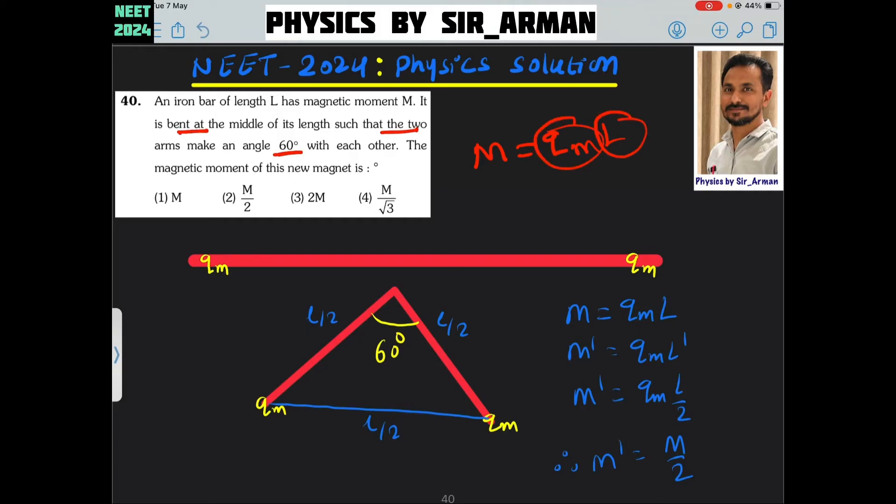Now, we are bending from the center such that it makes an angle 60. So, it forms a right angle triangle. This two length, if I draw another line here, it makes an, it also L by 2 because here angle given is 60 degree and these two are equal.